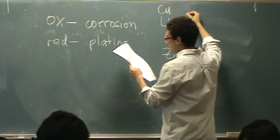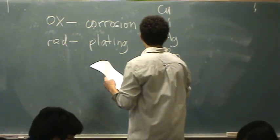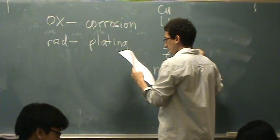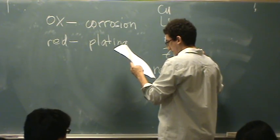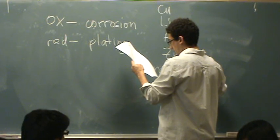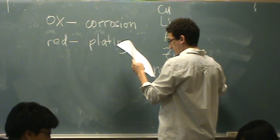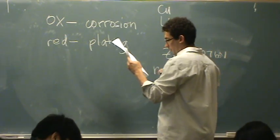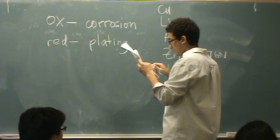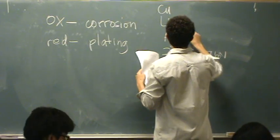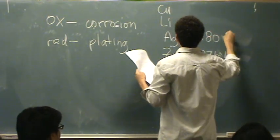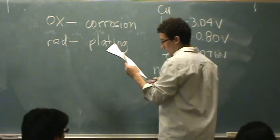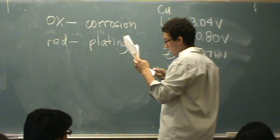Okay, so now let's write some reduction potentials here because I want to find out which ones of these reduce. Okay, this is zinc is negative 0.763 volts, silver is plus 0.8 volts, lithium is negative 3.04 volts, copper is 0.34 volts.